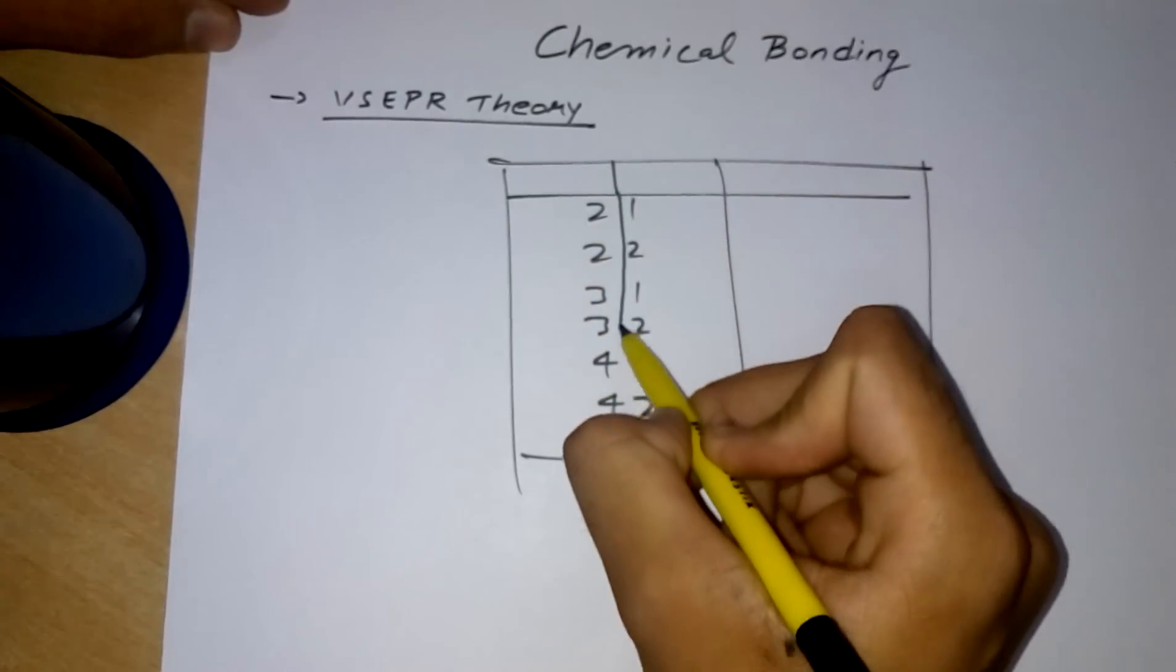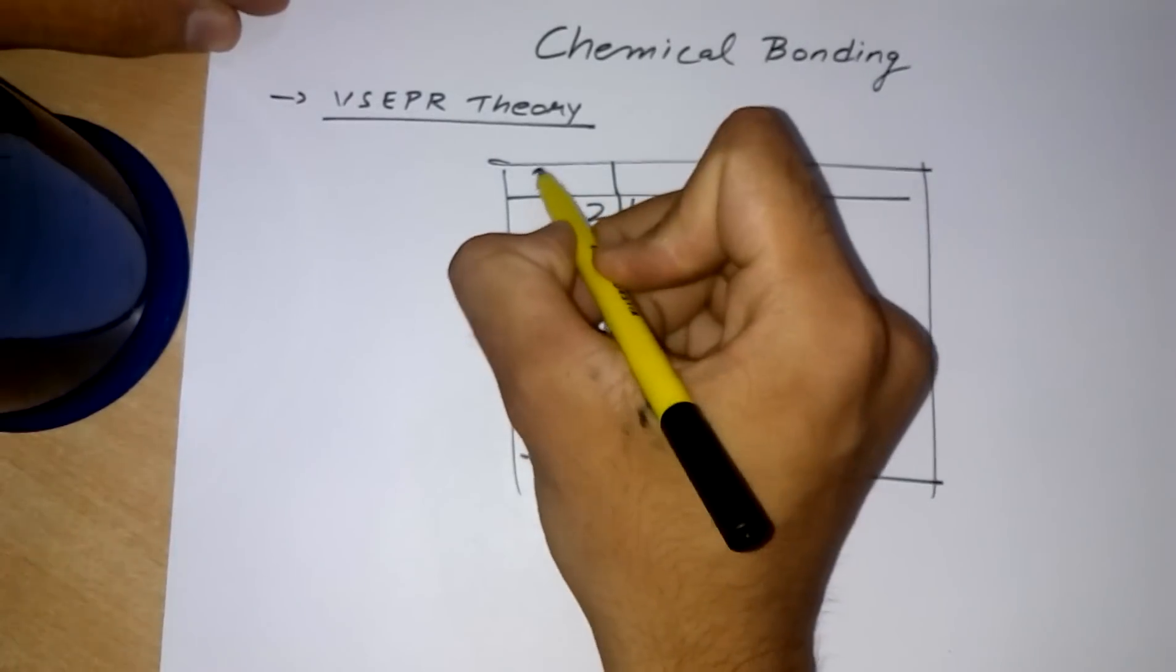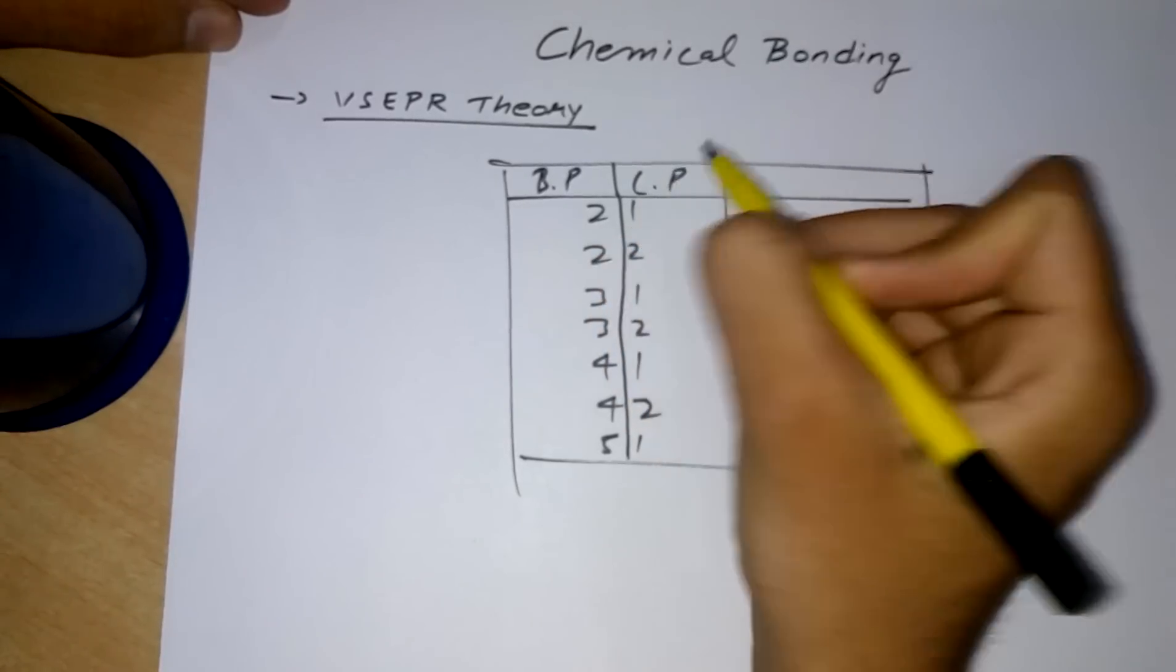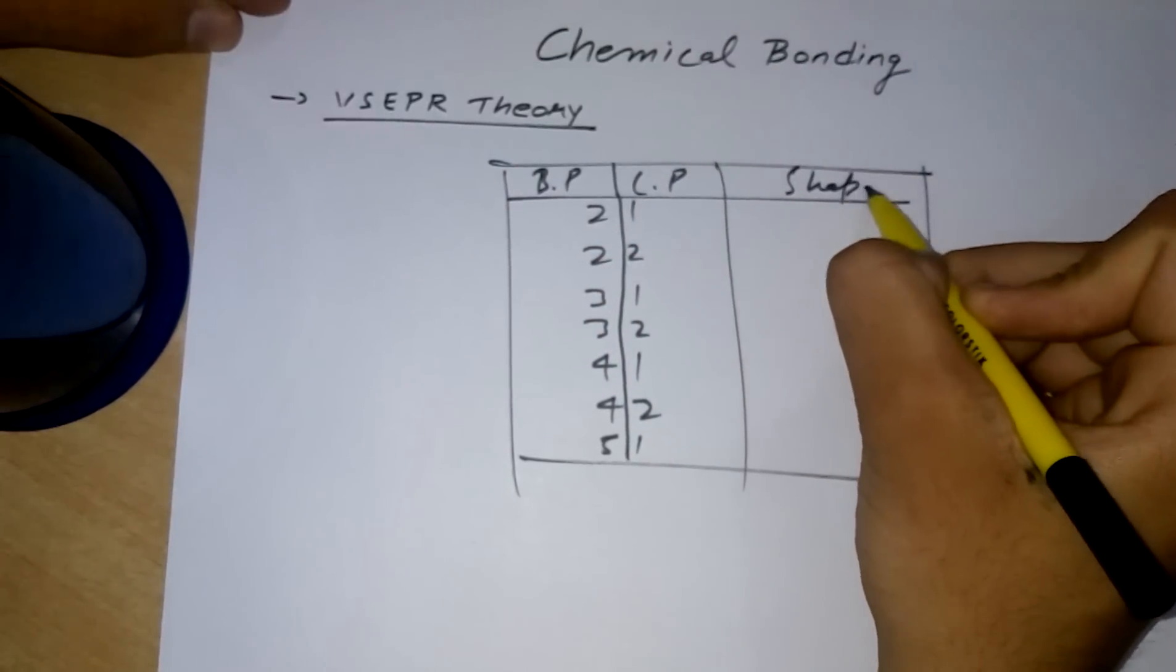Separate them. These are bond pairs, these are lone pairs, and here we have the shapes.